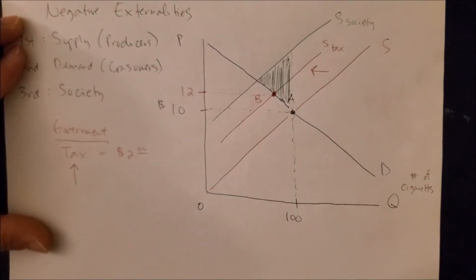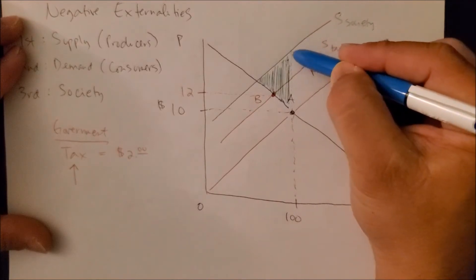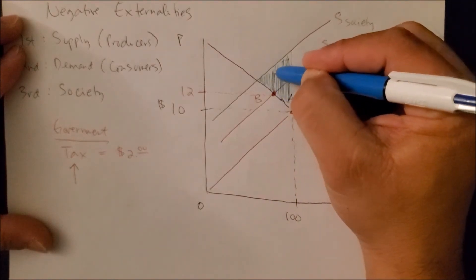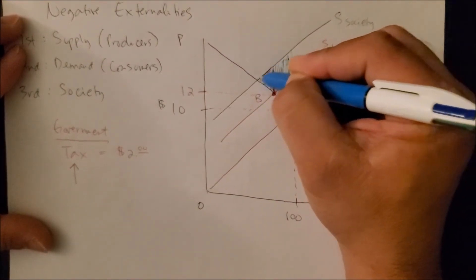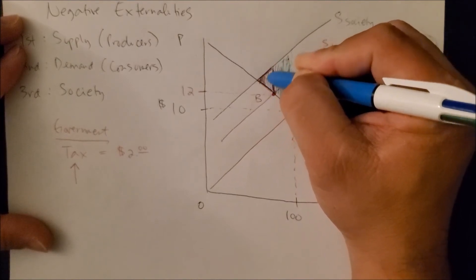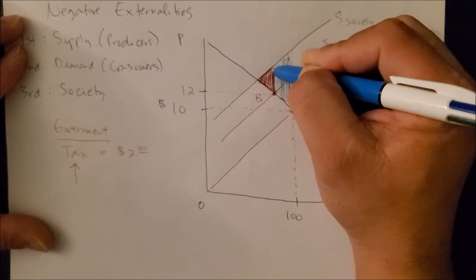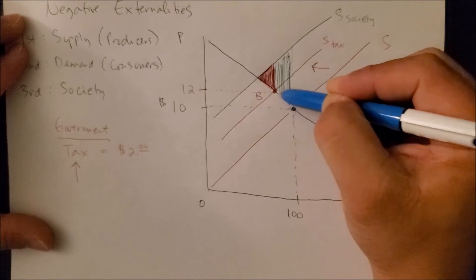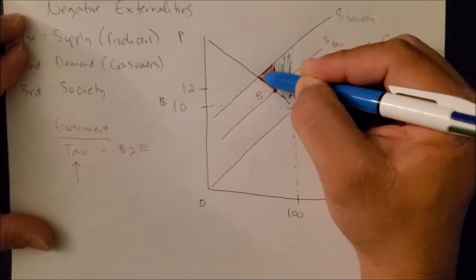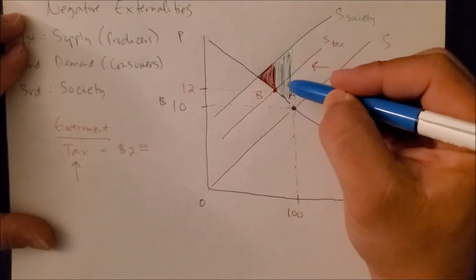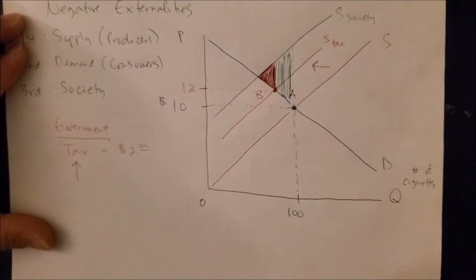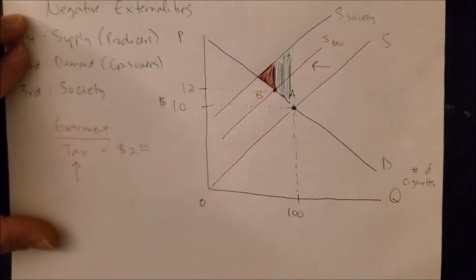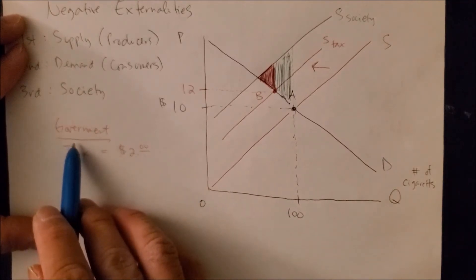Now more importantly, what's going to happen to this green triangle after a tax? The tax is going to create now a smaller red triangle as you can see on the graph. So what's happening is the initial cost in green is now smaller in red. And actually it has been able to minimize the cost society would have to be responsible for all because of a tax implemented by the government.